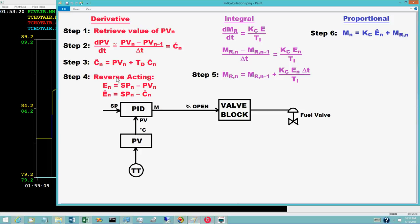Step 4 computes the control error E sub n and the projected control error E hat sub n. For a reverse acting controller, E sub n is setpoint sub n minus PV sub n. E hat sub n is setpoint sub n minus C hat sub n. For a direct acting controller, the signs are reversed. For derivative based on E, the equations for step 1 through 4 are similar.